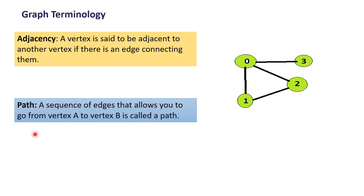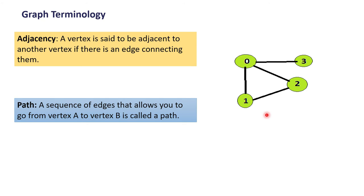The next term is path. A path is a sequence of edges that allows you to go from vertex A to vertex B. Suppose I have to go from one to three — a route is present: from one to zero we can go, then from zero to three we can go, so this is a path between one and three. Another path also exists: from one to two, then two to zero, then zero to three. A path can also be just from one to two directly, or via zero. So a path is a sequence of edges that allows you to move from one node to another.